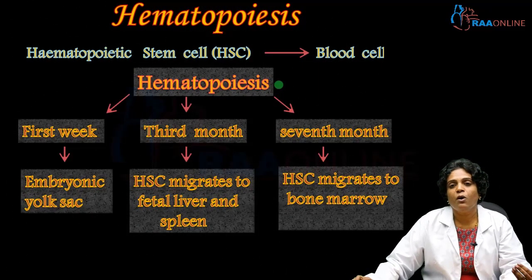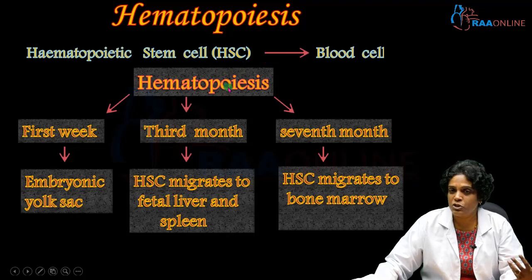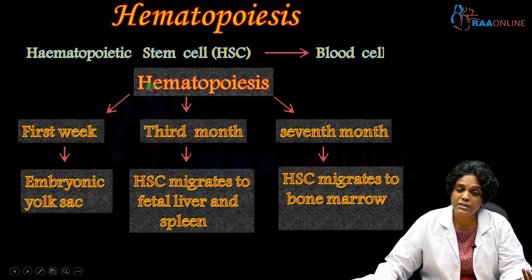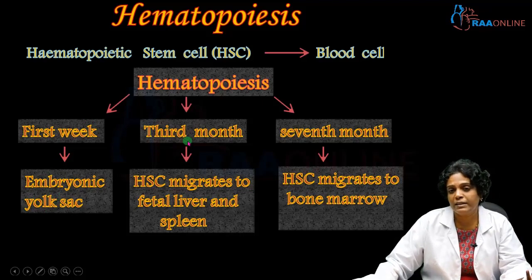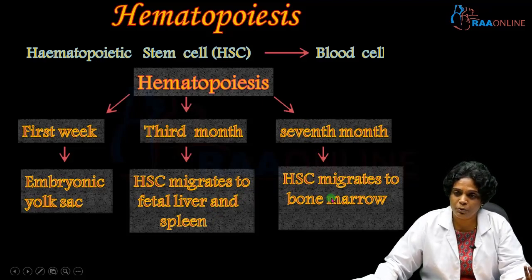Before moving into the organs of the immune system, let's have a look at hematopoiesis. All blood cells develop from a hematopoietic stem cell, which is both pluripotent and multipotent in nature. Hematopoiesis begins during the first week of embryonic life in the yolk sac, and during the third month the hematopoietic stem cell migrates from the yolk sac to the fetal liver and spleen. By the seventh month, it migrates from the liver and spleen to the bone marrow.